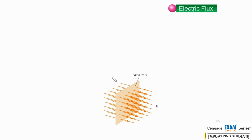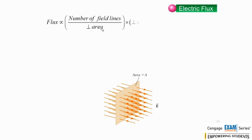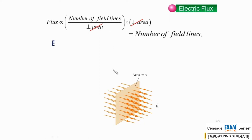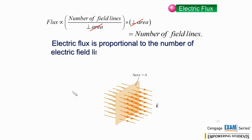Flux is proportional to the number of field lines divided by area, multiplied by the perpendicular area. The areas cancel out, and we are left with the term number of electric field lines. So electric flux is proportional to the number of electric field lines penetrating a surface.